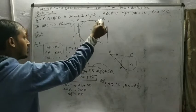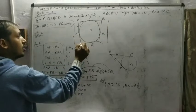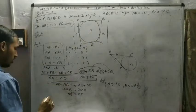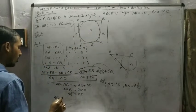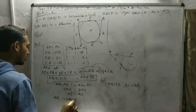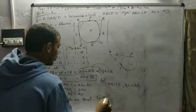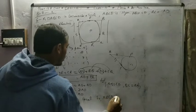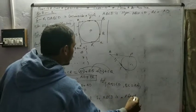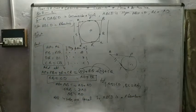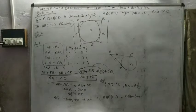If AB equals AD, and we already know AB equals CD and BC equals AD, therefore all four sides are equal. So ABCD is a rhombus. I hope you understand the good concept for proving that a parallelogram circumscribing a circle is a rhombus.